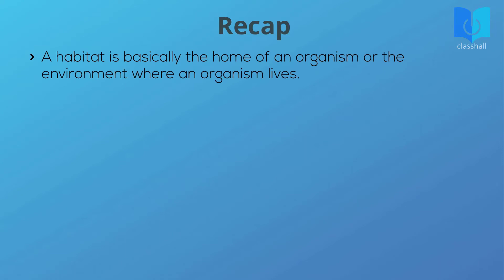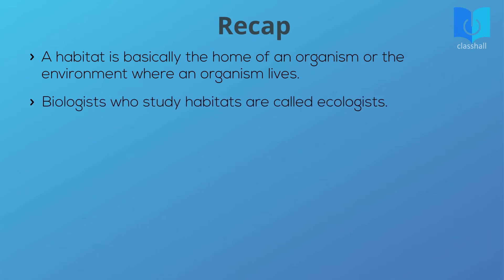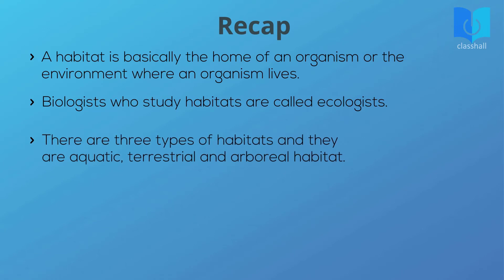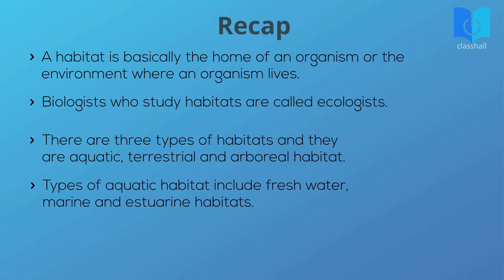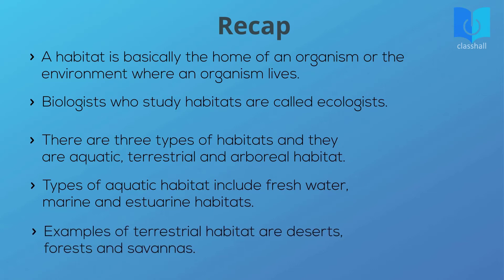A habitat is basically the home of an organism, or the environment where an organism lives. Biologists who study habitats are called ecologists. There are three types of habitats: aquatic, terrestrial, and arboreal. Types of aquatic habitat include freshwater, marine, and estuarine habitats. Examples of terrestrial habitat are deserts, forests, and savannahs.